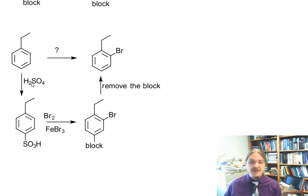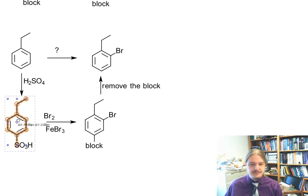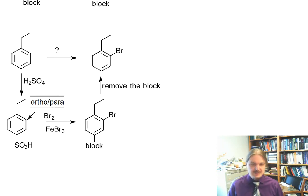Our first step then involves sulfonating ethyl benzene, and that happens primarily at the para position. Now we have the ethyl group, which is an ortho para director directing further substitution ortho and para. We have the sulfonic acid group, which is a meta director directing substitutions meta to it, which happen to be ortho to the ethyl benzene.